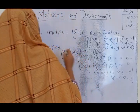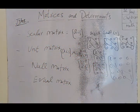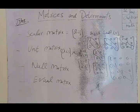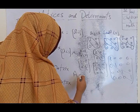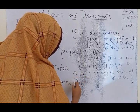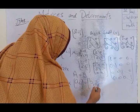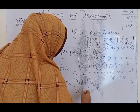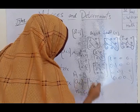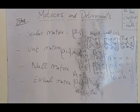A null matrix is one where all entries are zero. For an equal matrix, two matrices A and B are equal if they have the same order and all corresponding entries are equal, that is A(i,j) equals B(k,l) for all entries.